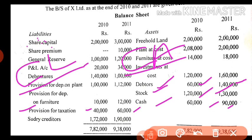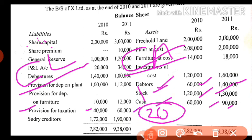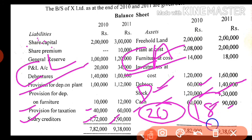Provision for taxation increased, so it should be shown in the decrease column because an increase in current liability decreases working capital. For sundry creditors: 1,72,000 to 1,80,000 — there is a difference of 18,000, and it should also be shown in the decrease column because an increase in current liability shows a decrease in working capital.